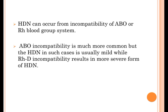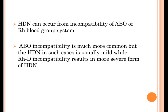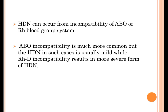HDN can occur from incompatibility of ABO or RH blood group systems. ABO incompatibility is much more common, but HDN in such cases is usually mild, while RHD incompatibility results in a more severe form of HDN.